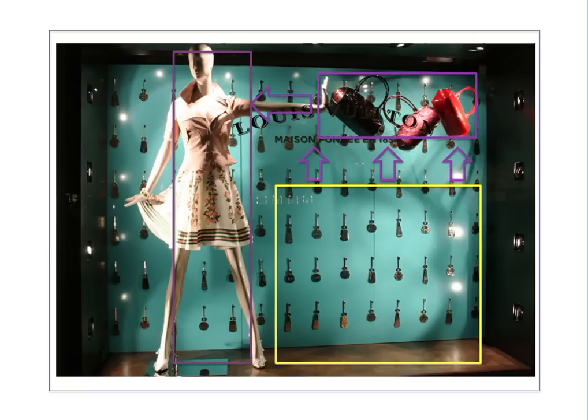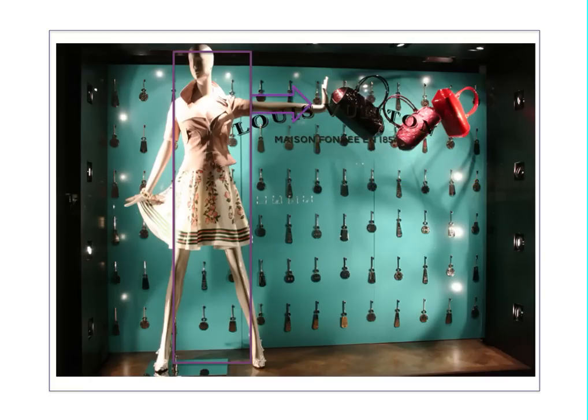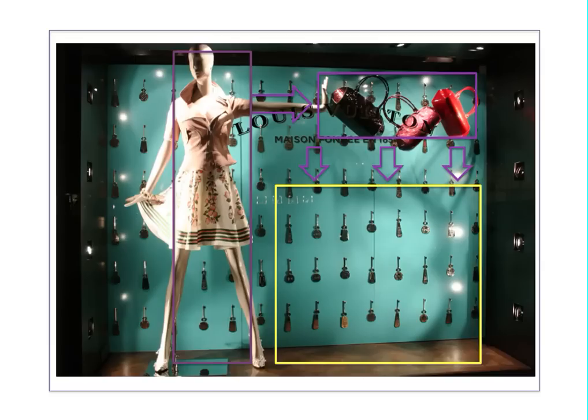In this window, as I told you before, you can see how the rhythm can be also read in the opposite way. First the mannequin, then the arm, the bags, and then the empty space. So this is a clear example, really easy and really clean.